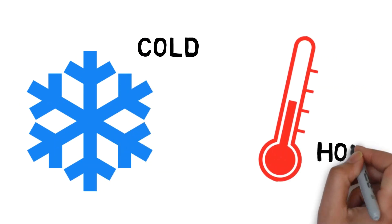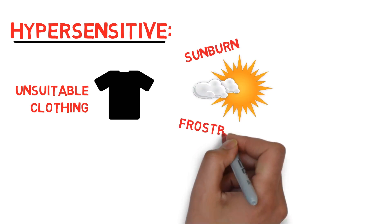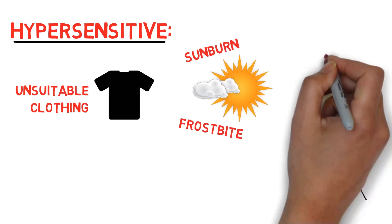If you're over-sensitive to it, you might feel the cold or the heat a lot more than other people. It can mean that you wear too much or too little clothing, get sunburn from not enough clothing, or overheat due to too many clothes.